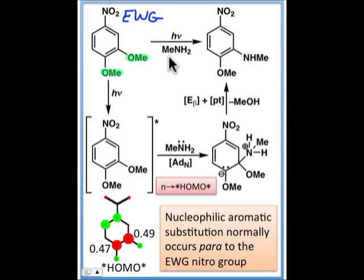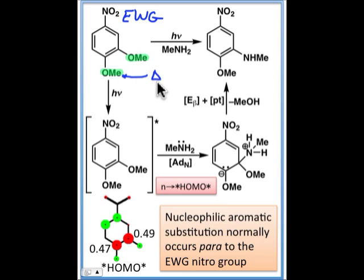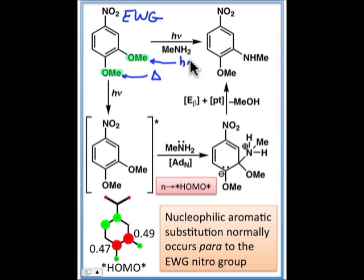Under thermal conditions, we would expect the methoxy group that's para to the nitro group to be displaced, but under photochemical conditions, it's the methoxy group that's meta to the nitro group that gets displaced.